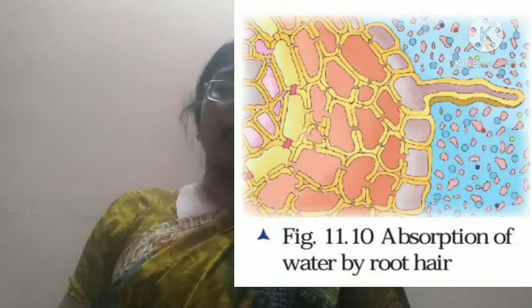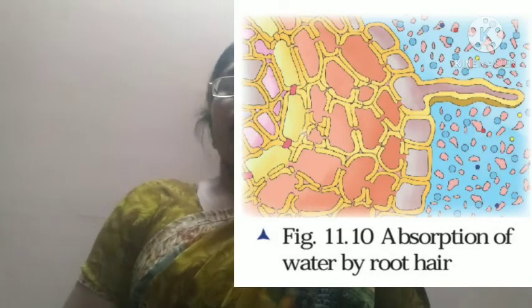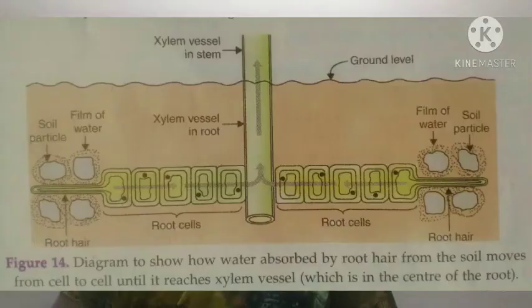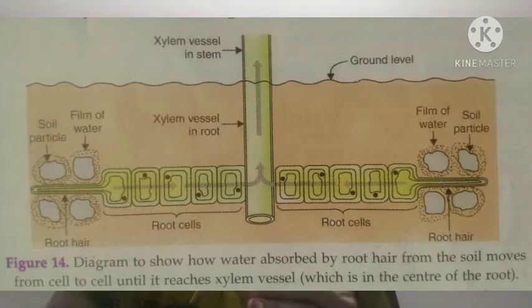The concentration of water is higher between the soil particles, so water moves into the root hair. Root hair is a single cell. From this single cell, water moves to the nearby cell, and in this manner, water travels cell by cell up to the xylem of the roots. Xylem is a vascular tissue — a complex tissue in which xylem vessels and tracheids are found — which transports water from roots to all other parts of the plant.